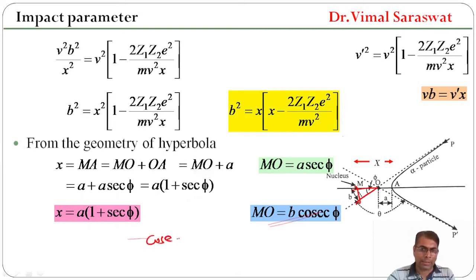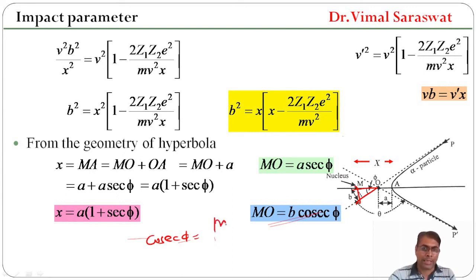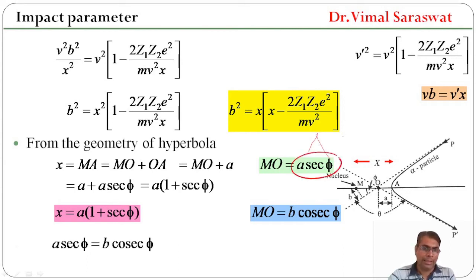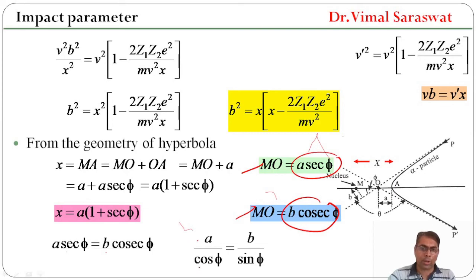Also, cosec φ = MO / b, so MO = b·cosec φ. Since MO = a·sec φ and MO = b·cosec φ, equating these: a·sec φ = b·cosec φ, giving a / cos φ = b / sin φ. From here, a = b·cos φ / sin φ, so a = b·cot φ.